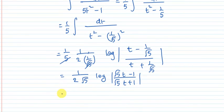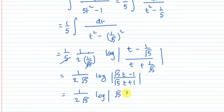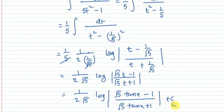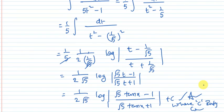Substituting back t equals tan x: the final answer is 1/(2 root 5) times log mod of (root 5 tan x minus 1) divided by (root 5 tan x plus 1), plus C, where C is the integral constant.